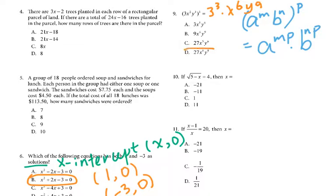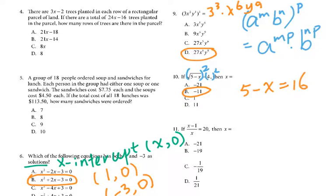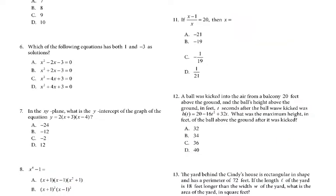For number 10, you can plug in the answer choices. Or if you want to work it out, square both sides: 5 minus x equals 16. Subtracting 5 from both sides gives negative x equals 11, so x equals negative 11. The easy way is to plug in to check the answer. The answer is B.